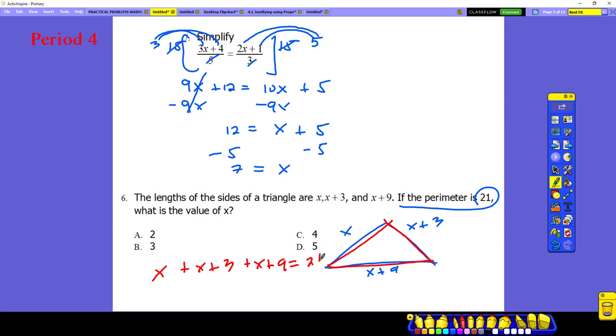So from here, we can solve your x. So x plus x plus x will give you 3x. 3 plus 9 will give you 12. Before we undo stuff, we tried to combine terms first.